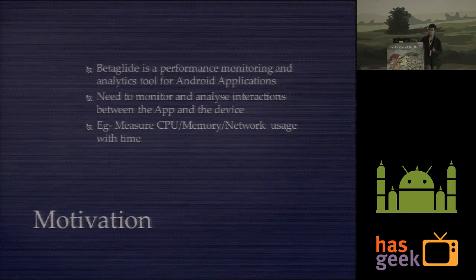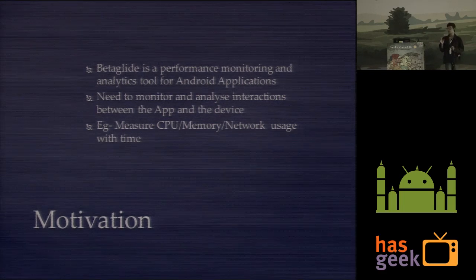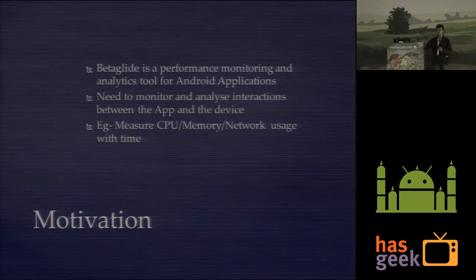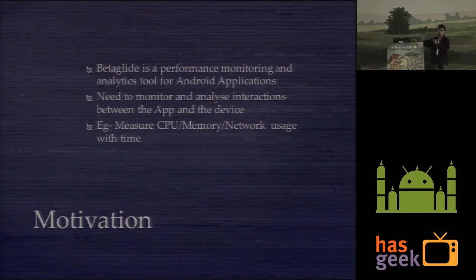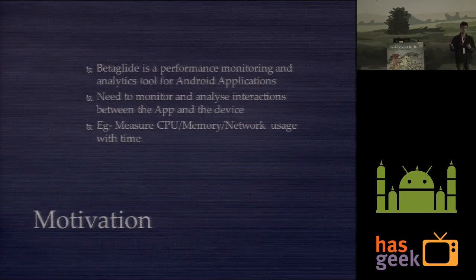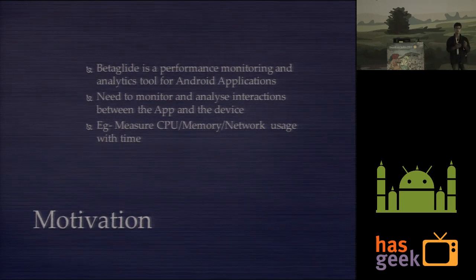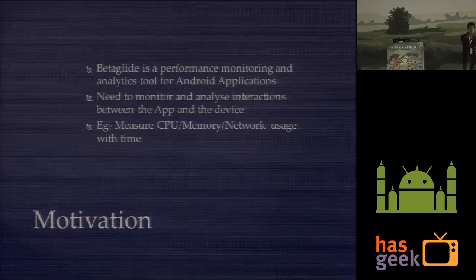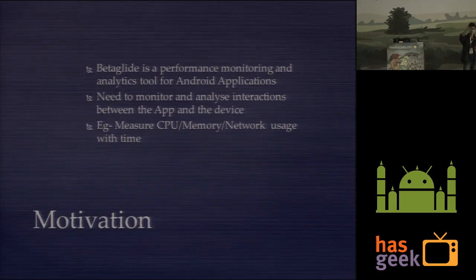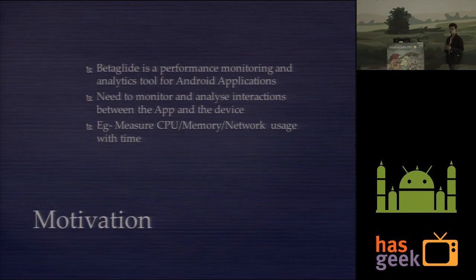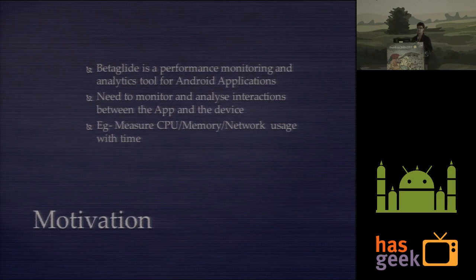So, motivation. Betaglide is a performance monitoring and analytics tool for Android applications. What we need to do is measure and monitor interactions between the application and the device — things like CPU performance, how much memory is allocated, how much data is transferred over the network, how many times the garbage collector has been called. And not just track this data — we need to correlate it with what is happening inside an application. If I just give you a graph of CPU usage over time, that's pretty much useless unless I tell you what was happening when your CPU usage spiked. Collection and correlation of data is basically what our tool does.